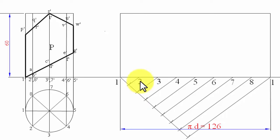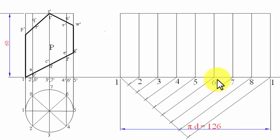Let's number them. Let's have vertical lines from all these points. Two, three, four, five, six, and so on. So, the time has arrived to transfer the points from the orthographic projection into its development.